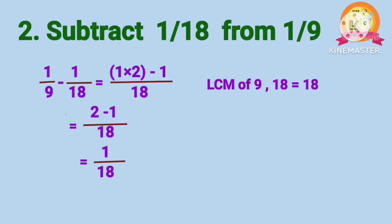Second problem: Subtract 1 by 18 from 1 by 9. That is 1 by 9 minus 1 by 18. LCM of 9 and 18 is 18. After subtraction, we get 1 by 18. So 1 by 9 minus 1 by 18 equals 1 by 18.